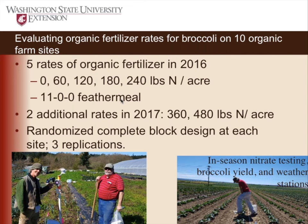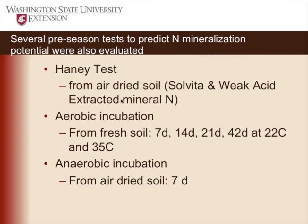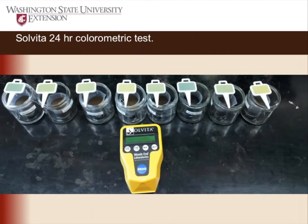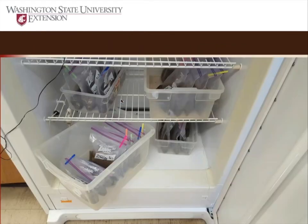Some of the predictive tests we looked at include the Haney test, which combines weak acid extracted mineral nitrogen with the Solvita CO2 burst — 24-hour CO2 production. We did an aerobic incubation for 42 days at 22 and 35 degrees C, testing soil at 7, 14, 21, and 42 days. We also did an anaerobic incubation, which is a classic nitrogen mineralization potential test. The soil-in-bag test, developed by Dan Sullivan at Oregon State, was also part of the protocol.